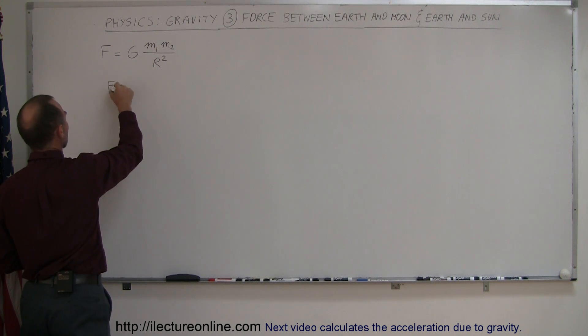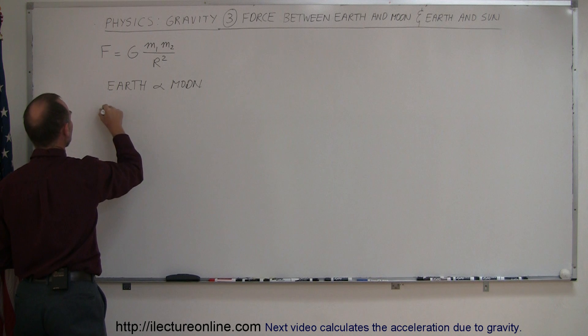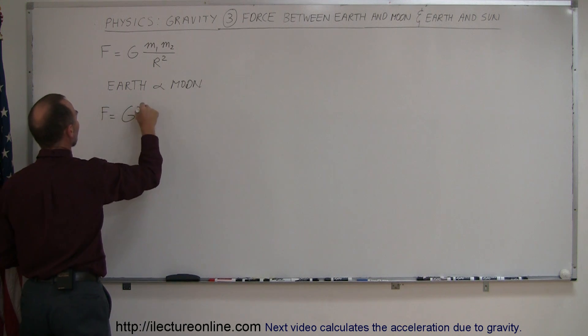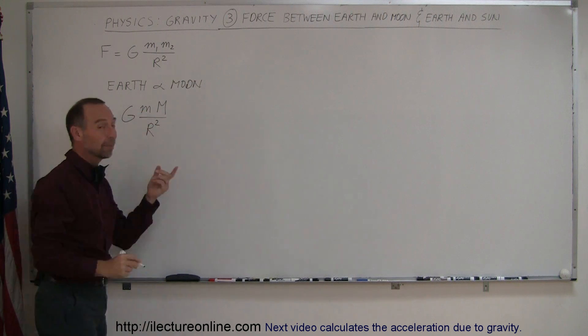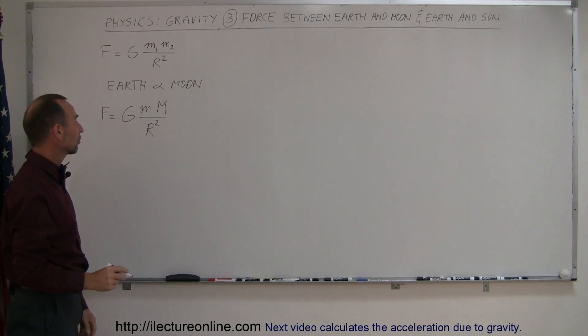Let's start with the Earth and the Moon. The equation would then read F equals G small m big M divided by the distance between them squared. Small m would be the mass of the Moon, big M would be the mass of the Earth.